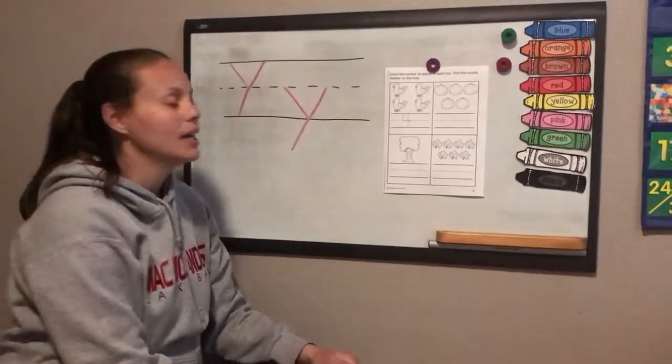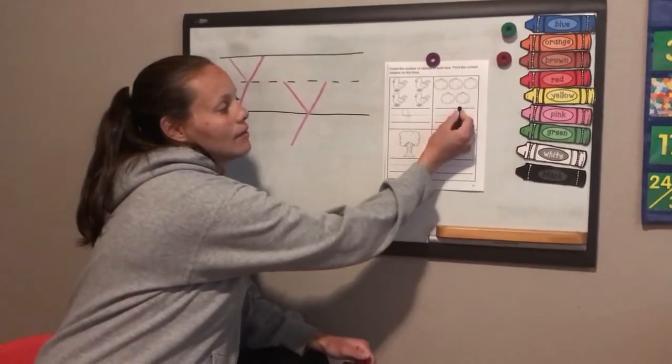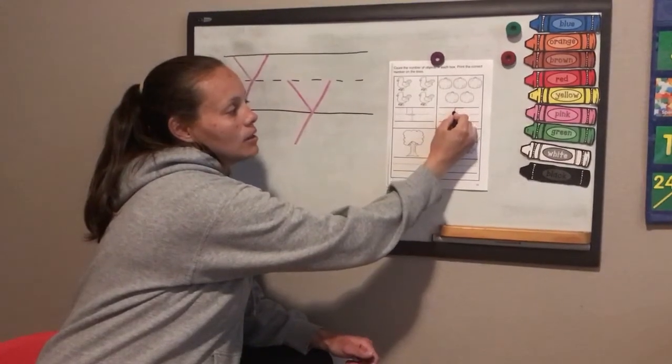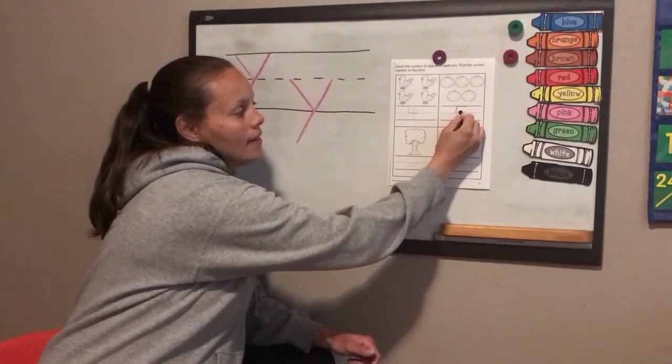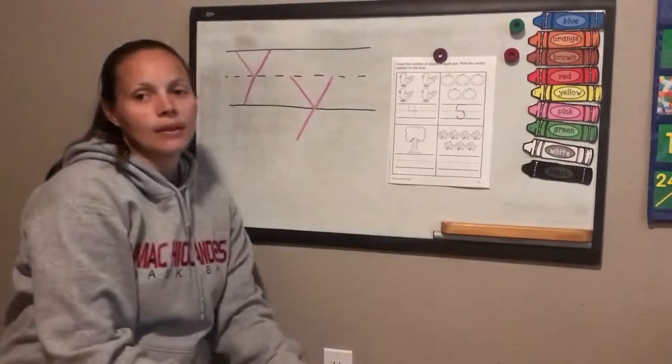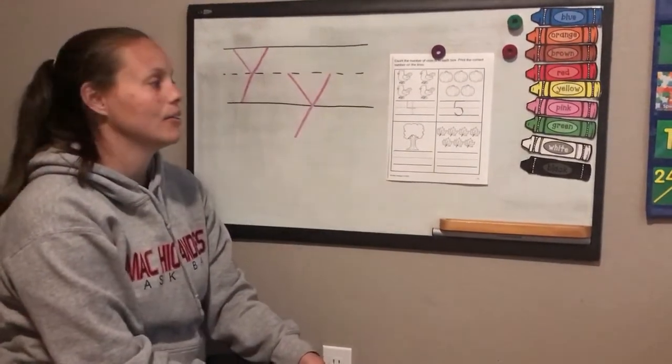Let's start with our five. Ready? We're going to go across the top, down to the dotted line, and then make your loop. Very good. Go ahead and write your five.